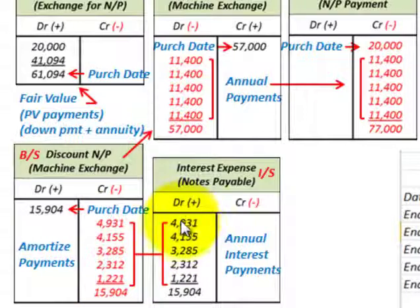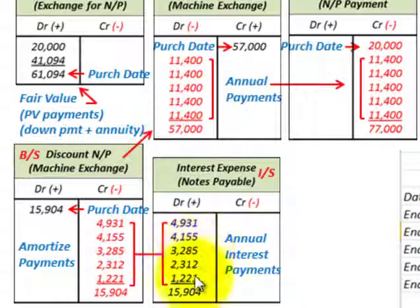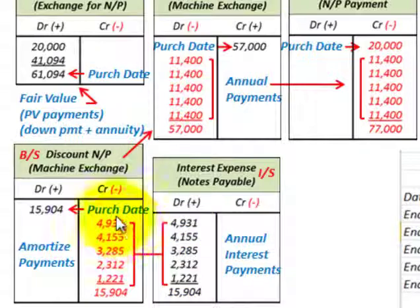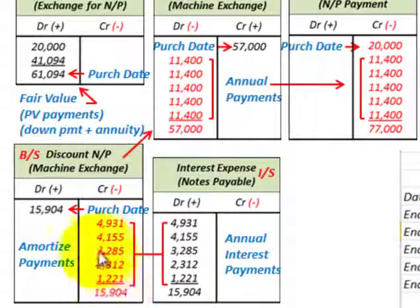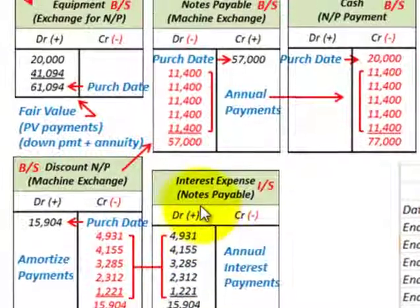Each period, we credit the discount on notes payable and debit interest expense on the income statement. The interest expense recognized each year represents the imputed interest element in the payments. The total discount on notes payable started at fifteen thousand nine hundred four dollars, and the total amortized interest expense also equals fifteen thousand nine hundred four dollars, fully eliminating the discount.